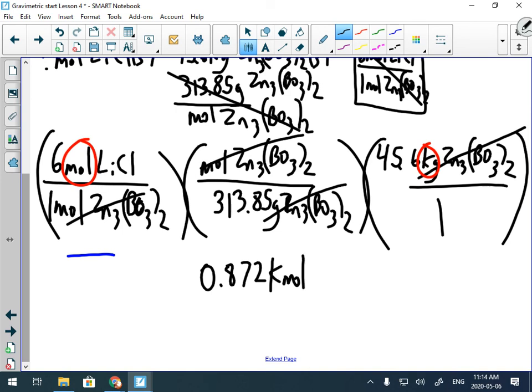Now, if you don't like kilomoles, you could times this by 1,000 to get grams. So you just times this by 1,000 to get grams and you'd have 872 moles. It's the same thing. They're the same thing. It's okay. All right. So that's moles to mass or mass to moles. So there's a little bit of extra variables that you have to add for those problems.